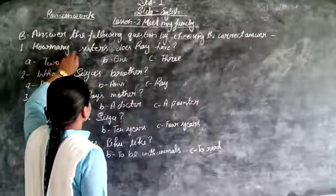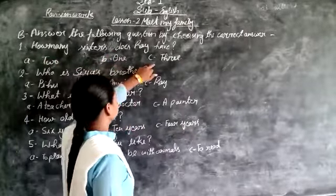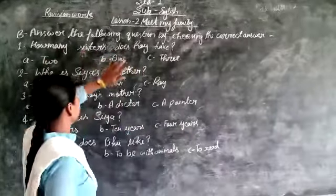We answer the following question by choosing the correct answer. First question is how many sisters does Roy have? Two, one, three.